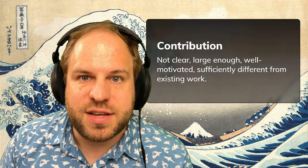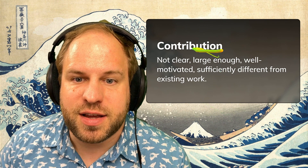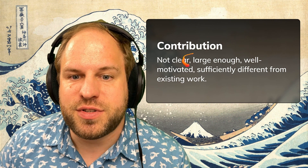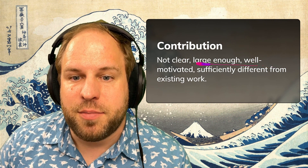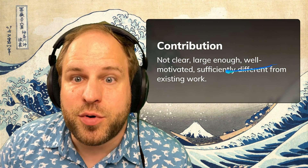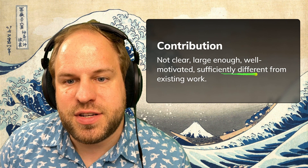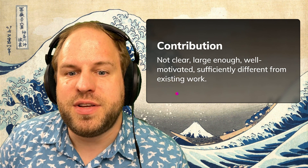First thing that can happen is your contribution — maybe it wasn't large enough, maybe it wasn't clear enough, maybe it wasn't well motivated, maybe it wasn't sufficiently different from existing work. These are all reasons why CHI papers get rejected.